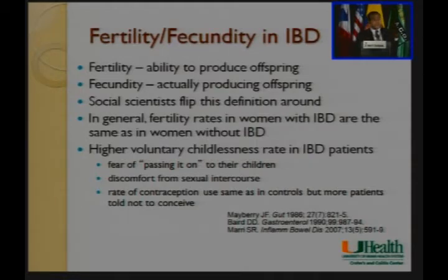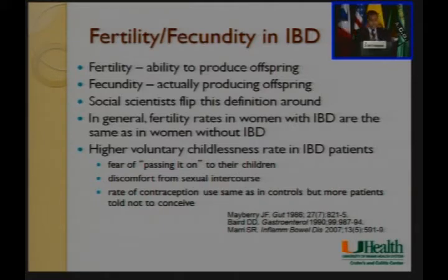There's a fear of passing IBD on to their children. We know that if one parent has Crohn's, there's only about a seven percent risk of their child having Crohn's, and if both parents have Crohn's, still only about a third of children will have Crohn's disease. Despite that, this concern persists. Particularly those with perianal disease may have some discomfort during sexual intercourse — another reason for higher voluntary childlessness.